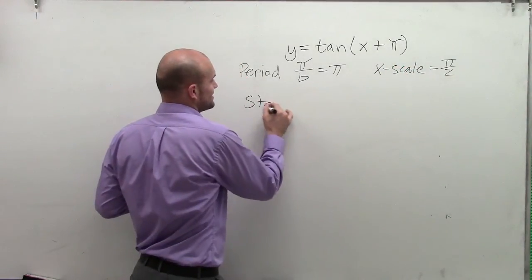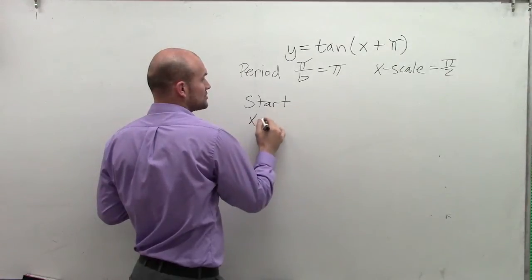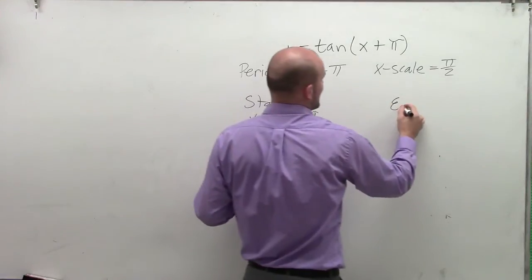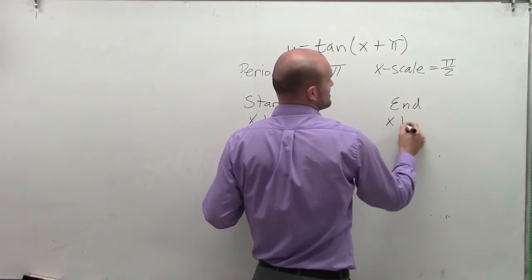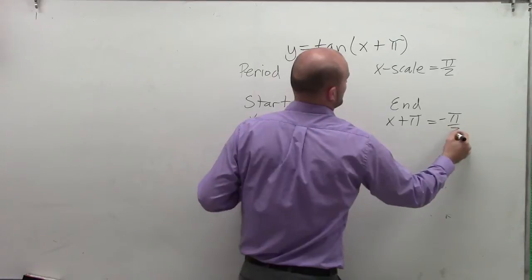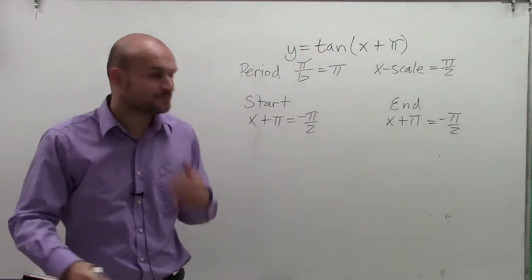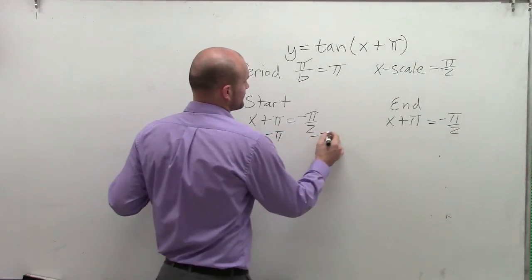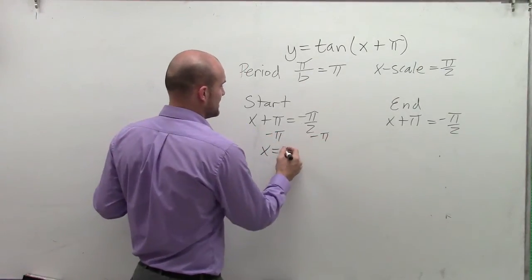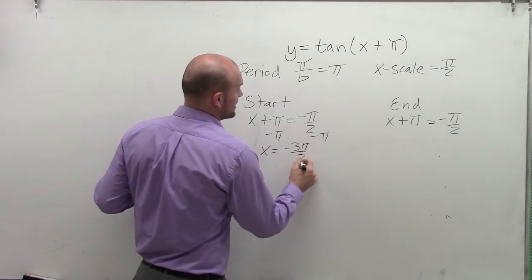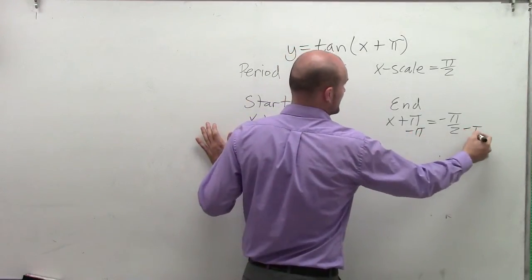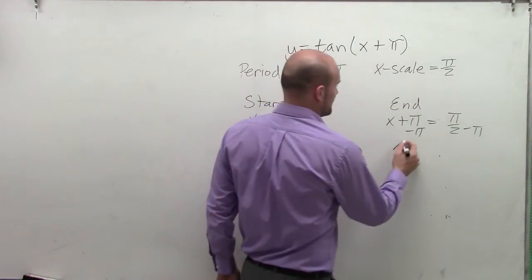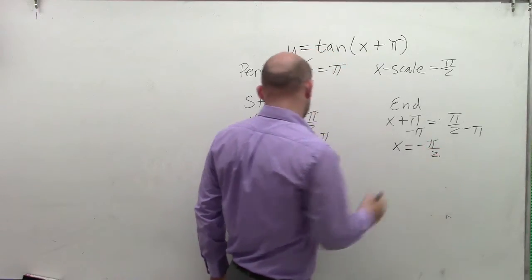So how it's going to affect it, we need to take what's inside my function, x plus pi equals negative pi halves, and then my end is now going to be x plus pi equals positive pi halves. So now I can simply just solve for x. I subtract pi, and I get my new start is now going to be negative 3 pi over 2. And I subtract pi over here, therefore x equals negative pi over 2.